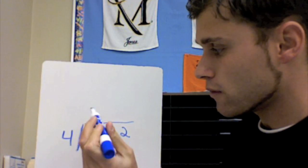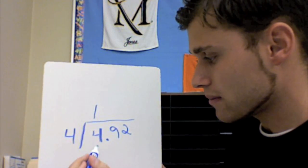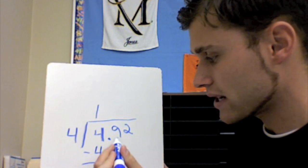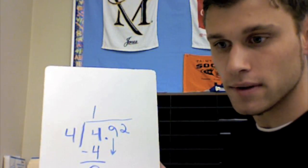4 goes into 4 one time. So we multiply, get 4, subtract, 0, bring down our 9. We've got to bring down our 9.